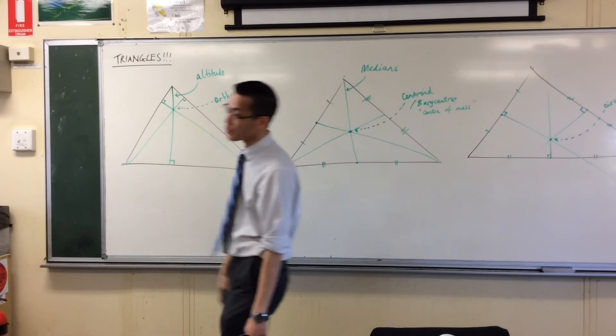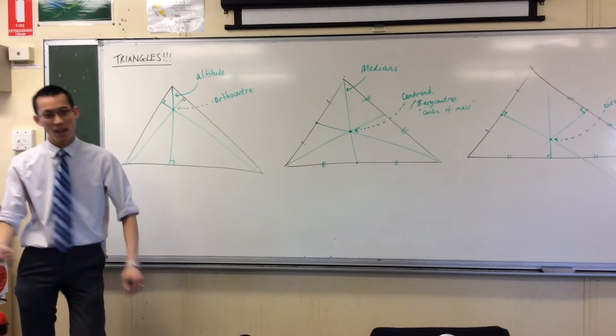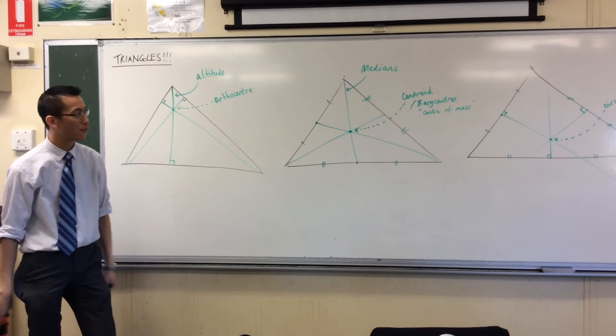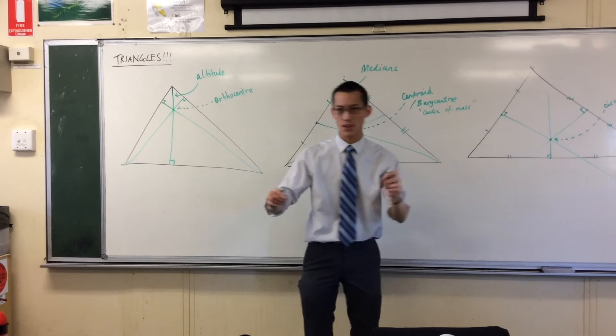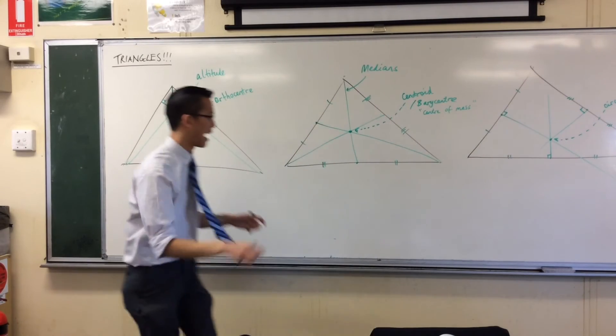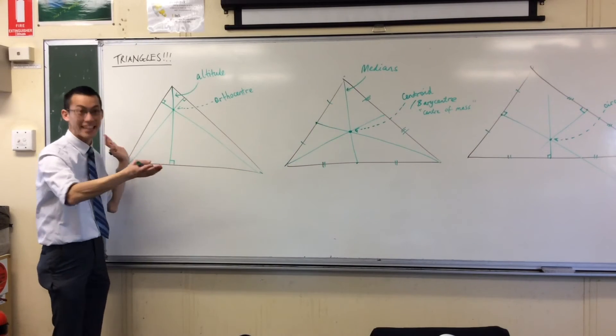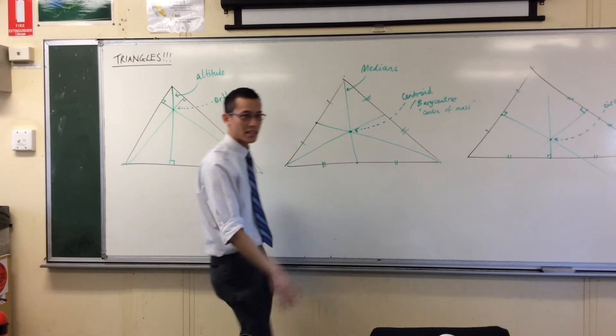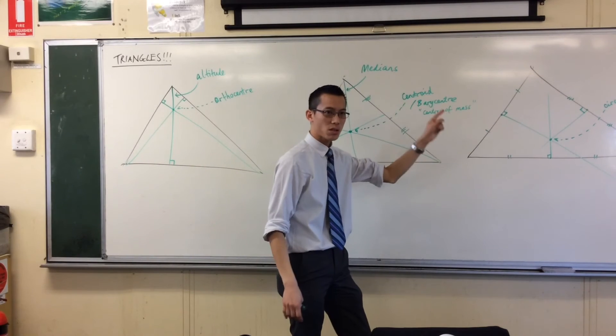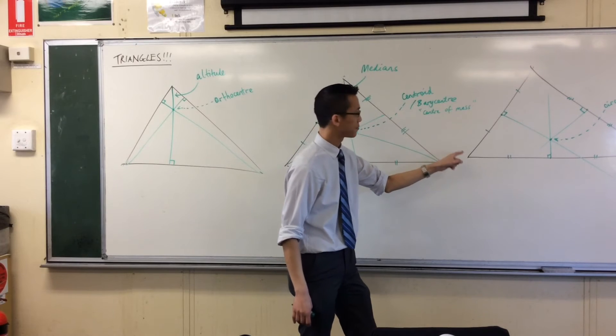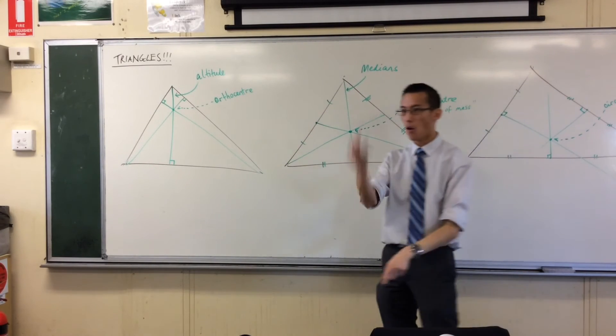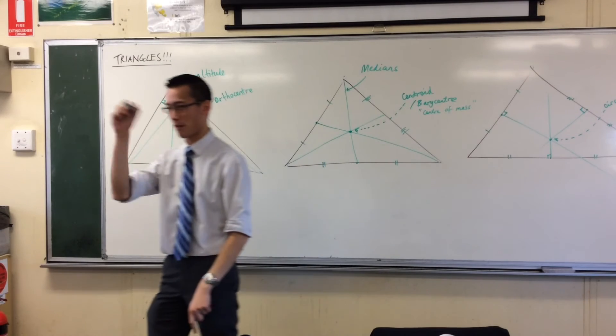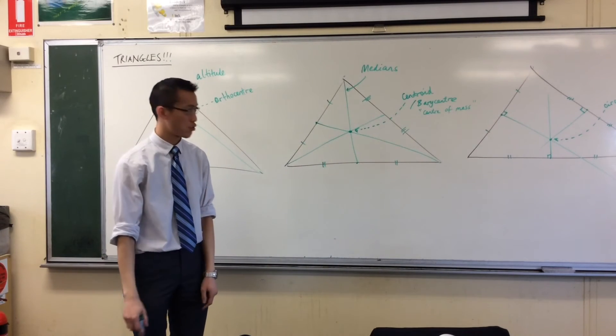Now, the reason it's called the circumcenter is because this point here is not just, in inverted commas, a center. I have to say a center because there are many different centers of the triangle. It's also a center of a circle that passes through all three points, all three vertices of the triangle.